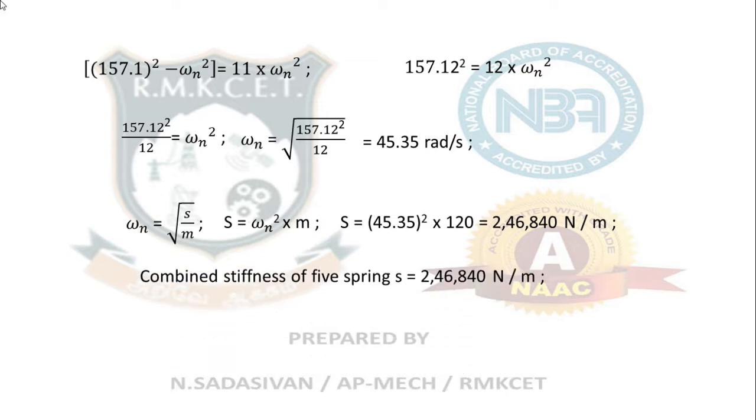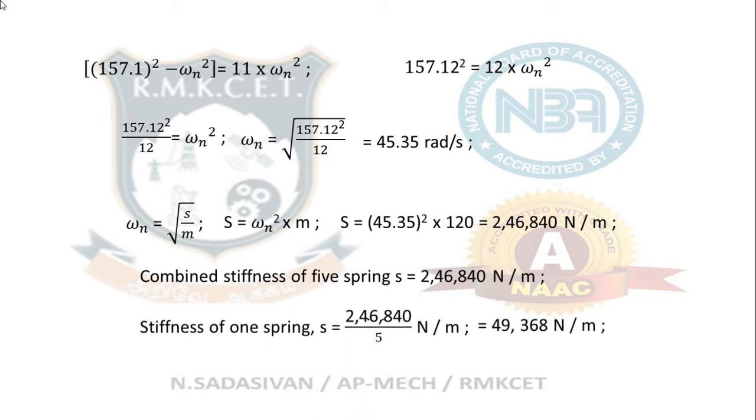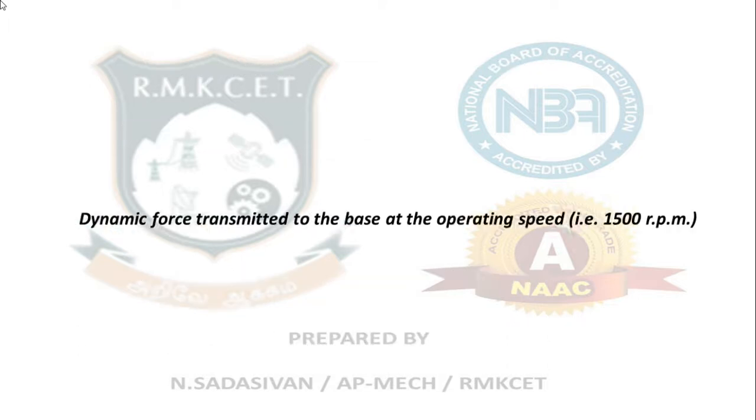If you do not read the question very carefully, you will miss that 5. Combined stiffness of 5 springs equals 246,840, so divide this by 5. We will get the stiffness of each spring: 49,368 Newton per meter. Hence the stiffness of 1 spring equals 49,368 Newton per meter.